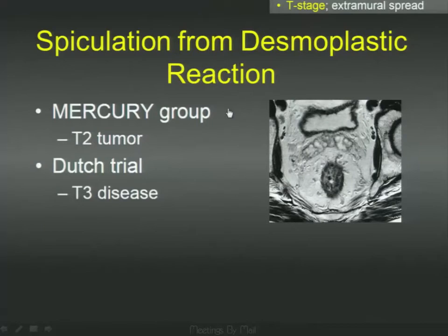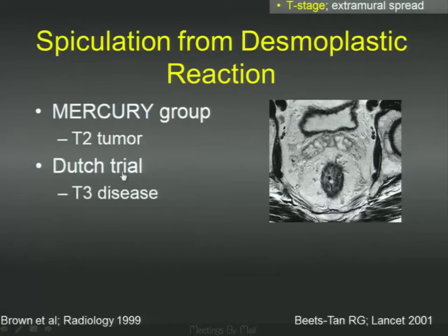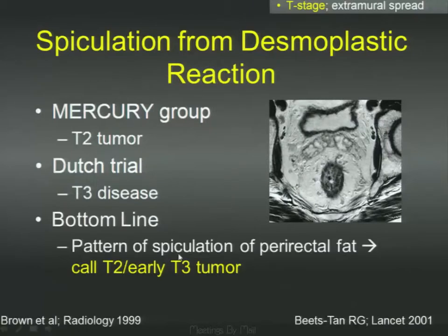There have been various studies looking at what to do when you see these linear strands. Gina Brown's group in the UK calls it T2, whereas Regina Beach, who was the first to look at MR in rectal cancer, puts it in the T3 basket. This is something to discuss with your surgeon regarding patient triage. The bottom line: if you see spiculations and you're not sure, you can call it T2 or early T3 disease and let them decide whether to triage to neoadjuvant therapy or take the patient straight to surgery.